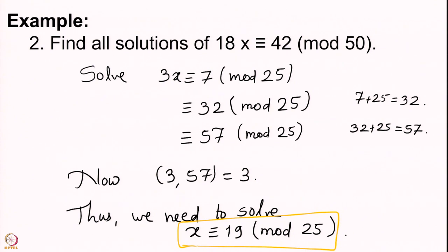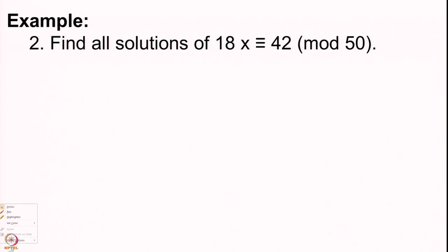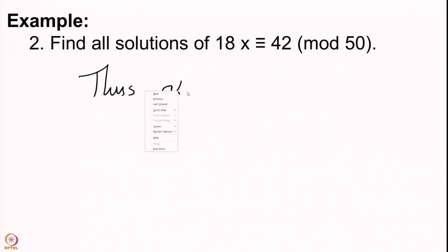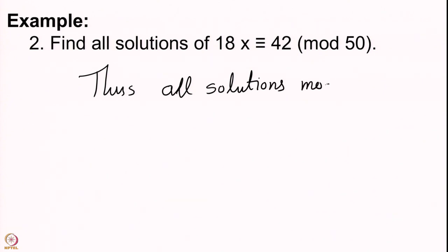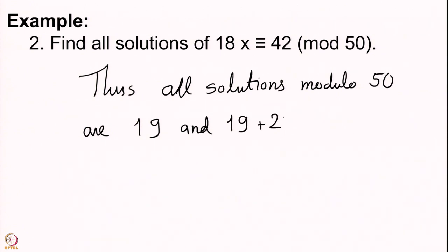We obtained the solution x ≡ 19 mod 25. As the lemmas pointed out, this solution does not change. Therefore, all solutions modulo 50 are 19 and 19+25 = 44.